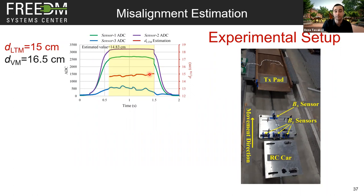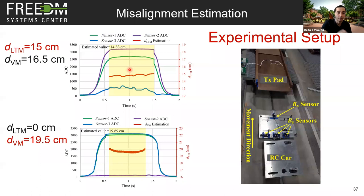Lateral misalignment is shown in real time as the red curve. With an actual lateral misalignment of 15 centimeters, we estimated 14.83 centimeters after averaging — an excellent result. For a separate test with 0 cm lateral misalignment and 19.5 cm vertical misalignment, we measured 19.69 cm vertically, demonstrating accurate estimation of both misalignment axes.